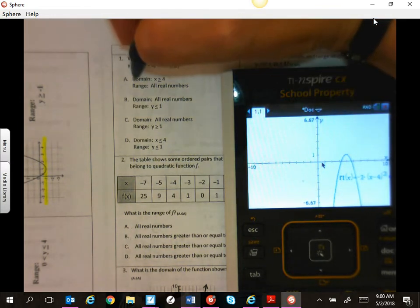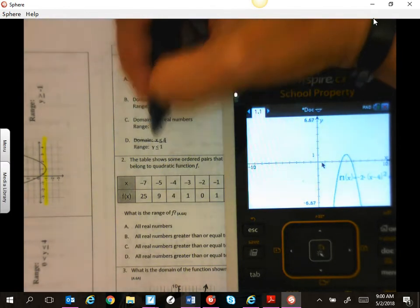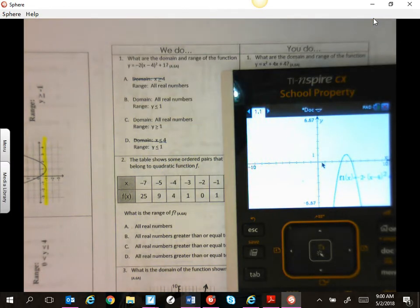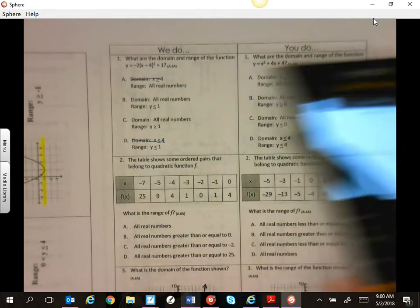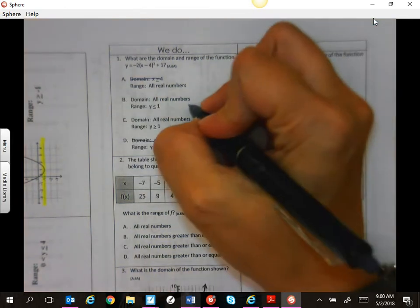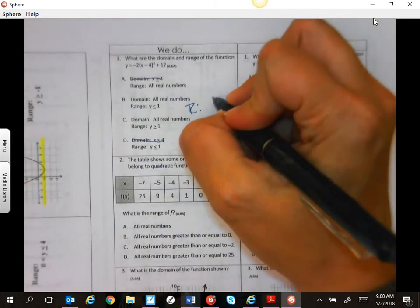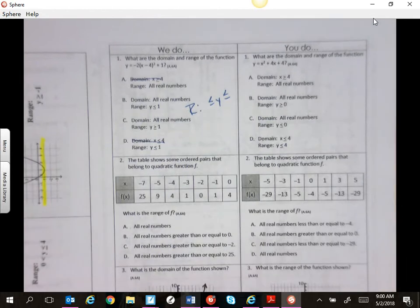So we'll just start over because that was a mistake on my part. Negative two x minus four squared plus one. So you can see now it's going to keep going in all directions going down. So domain is going to be all real numbers, so it can't be a or d. Now, this is at negative one. Negative one is the highest, so it's everything less than.